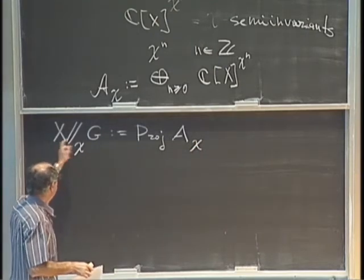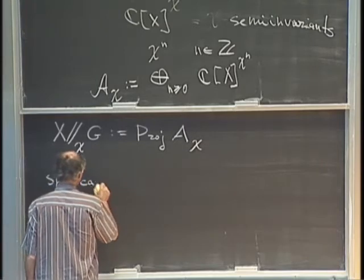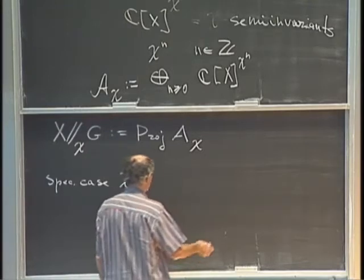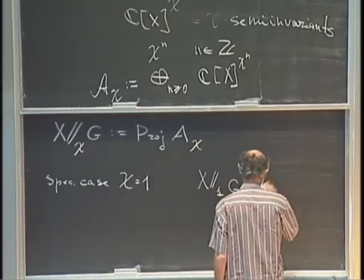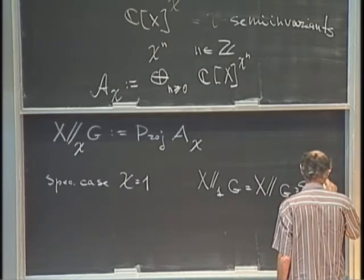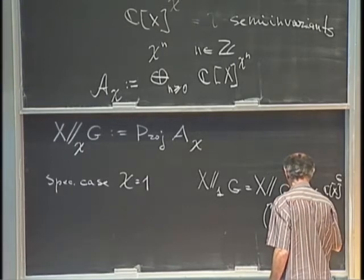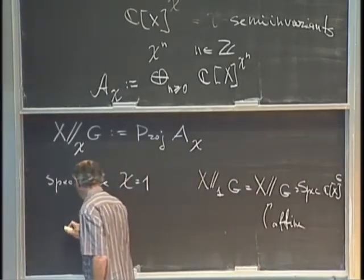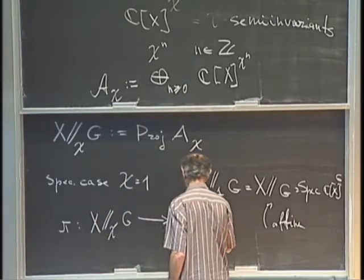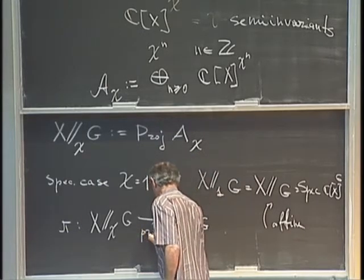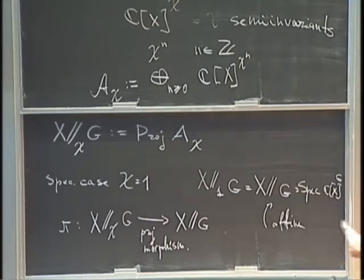One defines X double-slash chi G to be Proj of this graded algebra, and this is called a GIT quotient of X by G with respect to chi. In the special case where chi is one, this becomes just the usual categorical quotient, which is the spectrum of the algebra of invariants. There is a canonical projective morphism. This is the general GIT reminder.